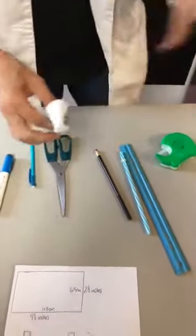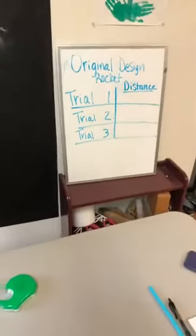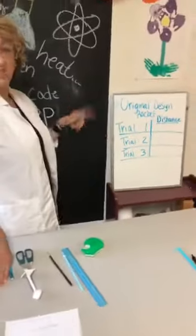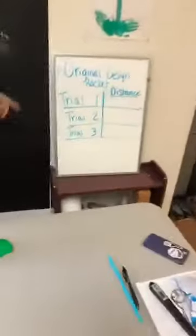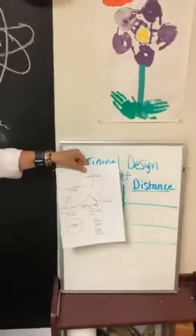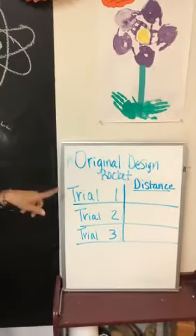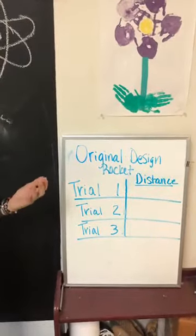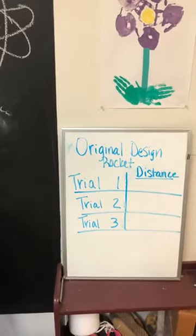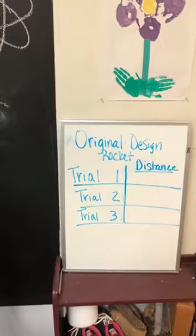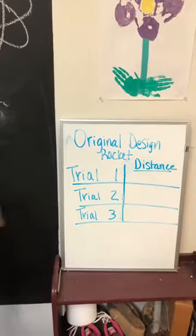So, let's look at what we're going to do to gather our data. Remember, if you're not writing down what you're doing, it's just messing around. So, this is the original design with those measurements. So, trial one, we're going to measure that distance that it travels. So, how do we measure the distance? We have to measure from the person that is exerting the air to the actual distance that the rocket traveled.